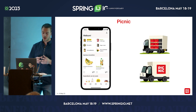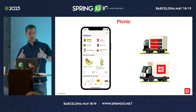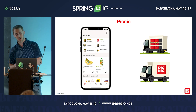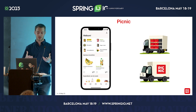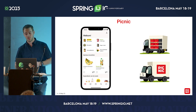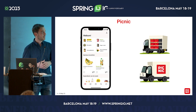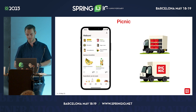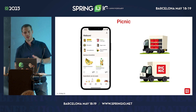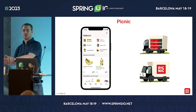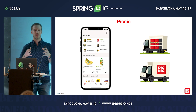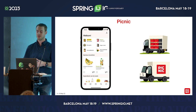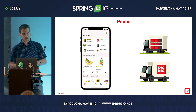Customers use the Picnic app to order all their groceries. They choose a specific time slot, and then we have someone who does the deliveries in these cute electric vehicles you see here on the right — it's a cartoonish version, but you get the idea. The customer only sees our app and the person who does the actual delivery. But of course, to power this whole system, a lot of software is involved, and we write all our software in-house.